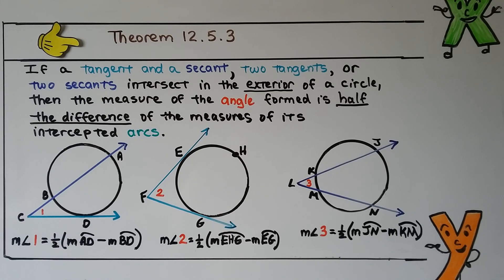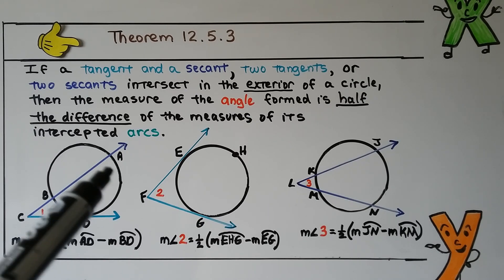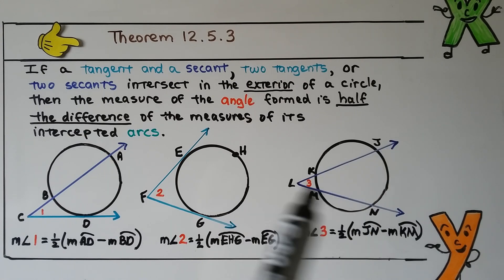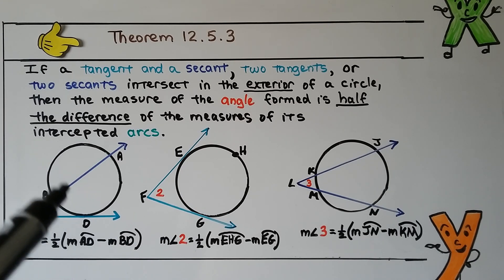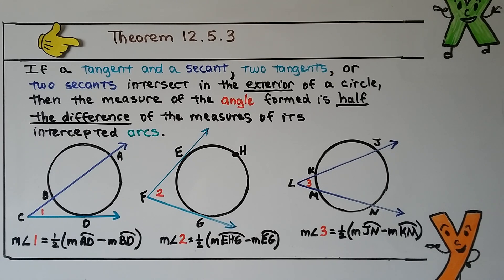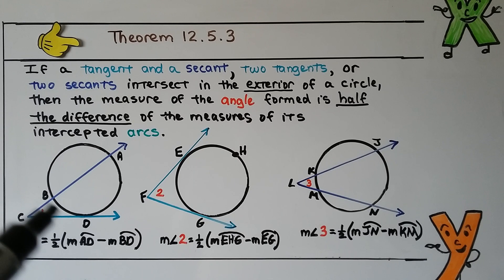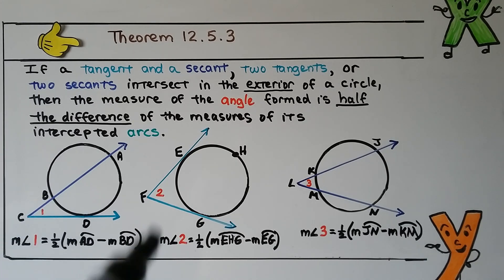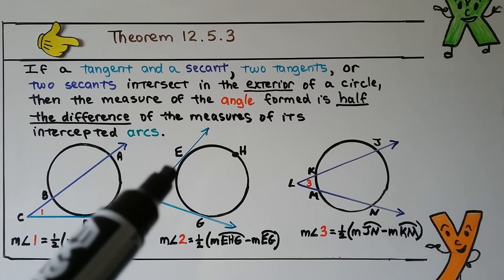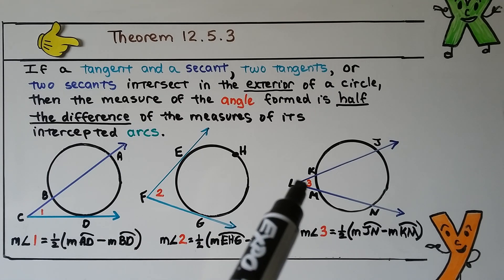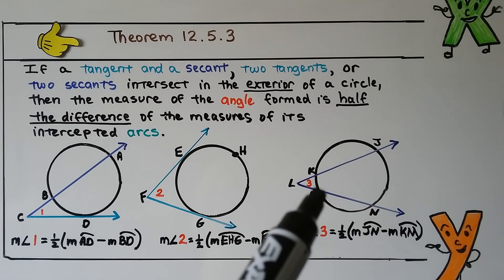Theorem 12.5.3: if a tangent and a secant, or two tangents, or two secants, intersect in the exterior of a circle, then the measure of the angle formed is half the difference of the measures of its intercepted arcs. Unlike the previous theorem where intersecting in the interior meant we add, intersecting in the exterior means we subtract. For angle one, it's half times arc AD minus arc BD; for angle two, half times arc EHG minus arc EG; for angle three, half times arc JN minus arc KM.